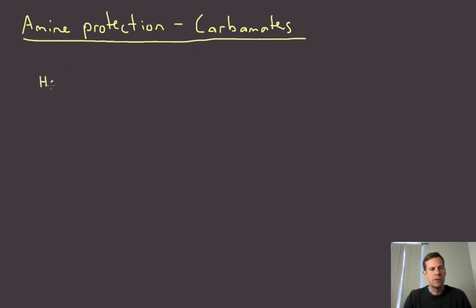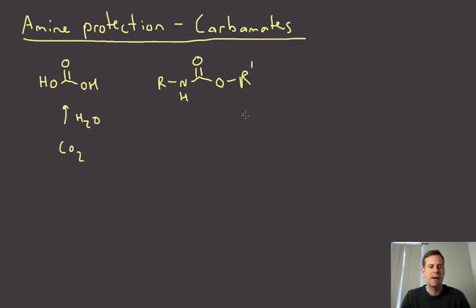The most common way to protect amines is via carbamates. So carbamate is actually a derivative of carbonic acid. Here's carbonic acid, it comes from the hydration of carbon dioxide. And so what we can do is take our amine of choice and essentially make an amide of carbonic acid. And then what we do on the other end is we have some ester. So it's like a half amide, half ester of carbonic acid. And this is what's known as a carbamate.